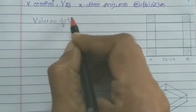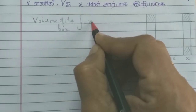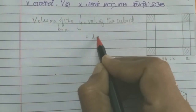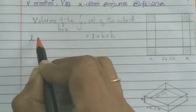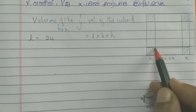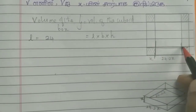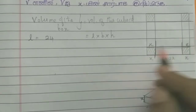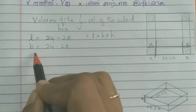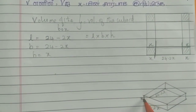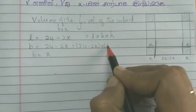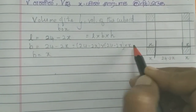Volume of the cuboid formula is Length × Breadth × Height. The length is 24 minus 2x, the breadth is 24 minus 2x, and the height is x. So V(x) = (24 − 2x)(24 − 2x)(x).